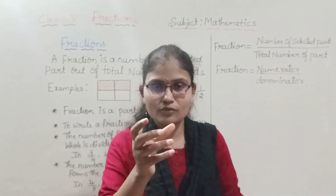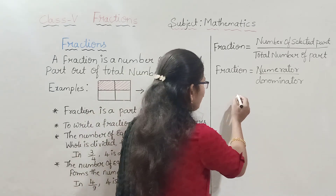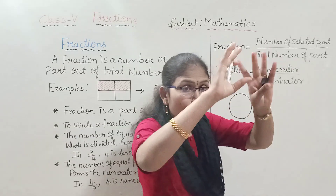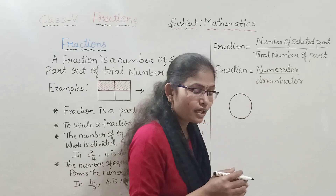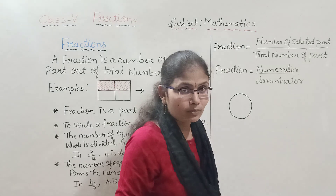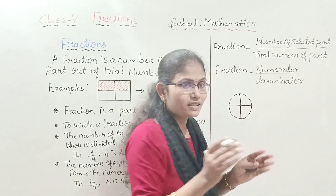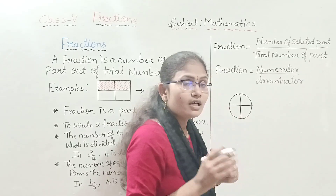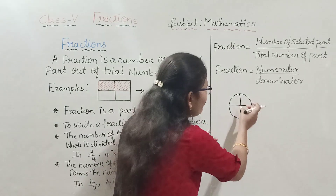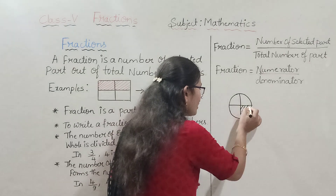Before going to the actual topic, let us consider a few examples. You know about a circle — let us take one circle. You can observe here, this is the shape of a circle. I have taken one whole circle. Now I will divide this circle into four equal parts. I have made four equal parts. From this circle, I require one part — I want to remove one part from the four equal parts.